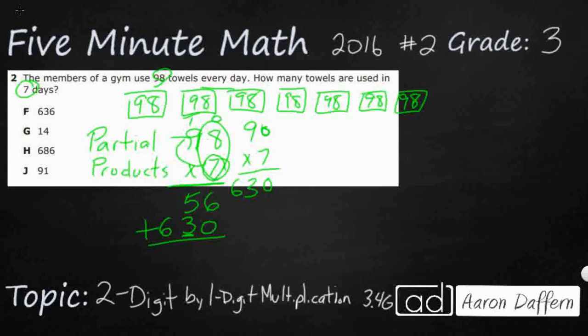And then you just add those up. You get two partial products. You add those up, and you are going to get 686.